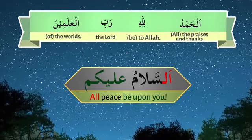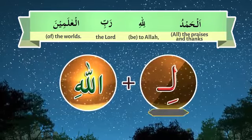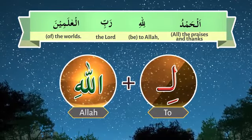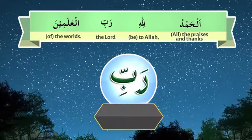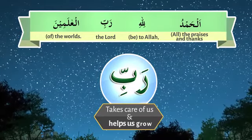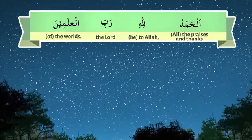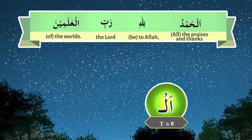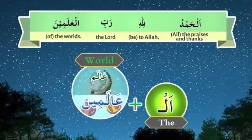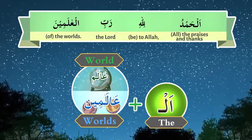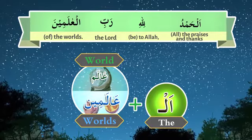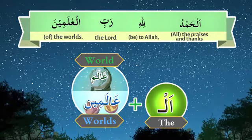Alhamdulillahi — 'be to Allah.' Li means 'to,' so lillahi means 'to Allah.' Rab means the one who takes care of us and helps us grow. Al-alameen: alam means world, alameen means worlds. Rabbil alameen means the Lord of the worlds, or the Rabb of the worlds.